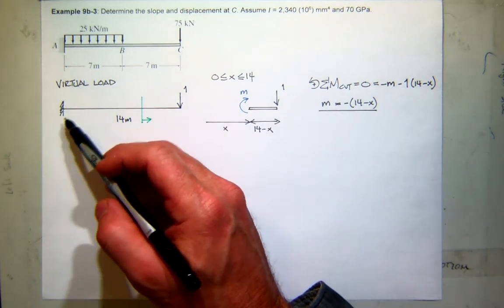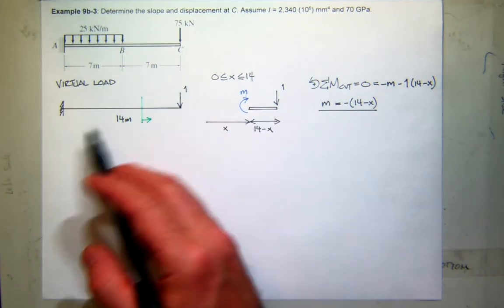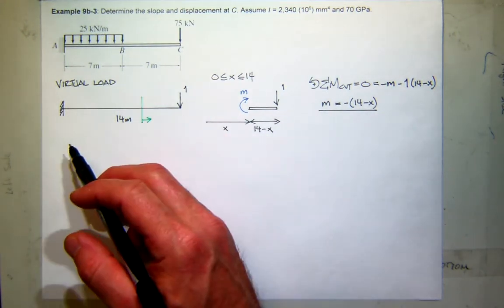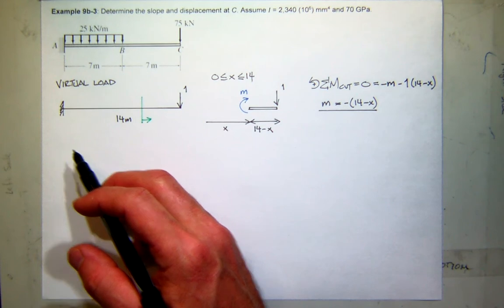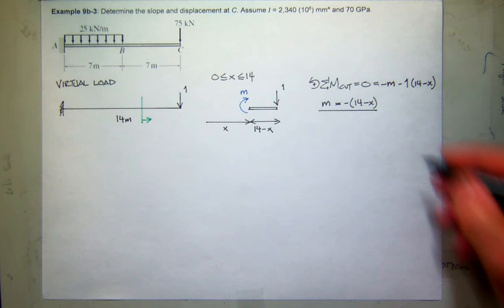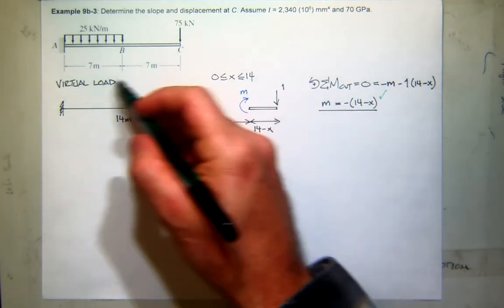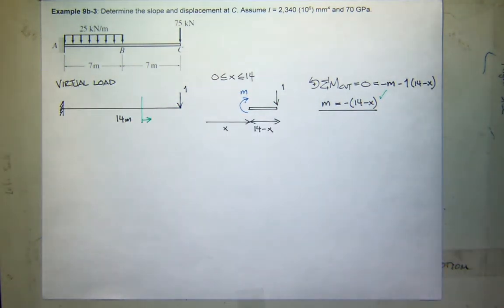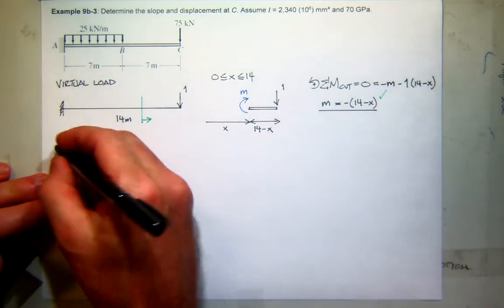And we can check that. Looking at this system, what do you think the moment at the free end is? Zero. So at x equals 14, this ought to give me zero, and it does. What do you think the moment at the reaction is for a single load of 1 at a distance 14 meters away? 14. You put in x equals 0, and you get negative 14. So I think that works. If this is the correct system, that's the moment in that system.